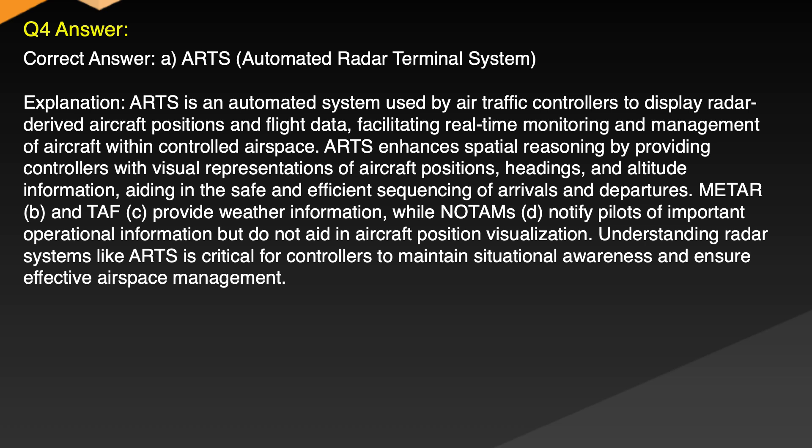Explanation: ARTS is an automated system used by air traffic controllers to display radar-derived aircraft positions and flight data, facilitating real-time monitoring and management of aircraft within controlled airspace. ARTS enhances spatial reasoning by providing controllers with visual representations of aircraft positions, headings, and altitude information, aiding in the safe and efficient sequencing of arrivals and departures. METAR and TAF provide weather information, while NOTAMs notify pilots of important operational information but do not aid in aircraft position visualization. Understanding radar systems like ARTS is critical for controllers to maintain situational awareness and ensure effective airspace management.